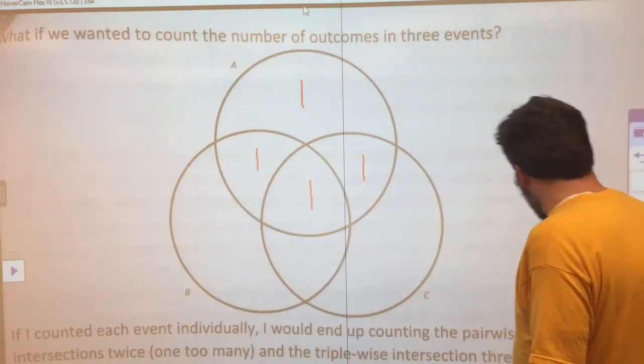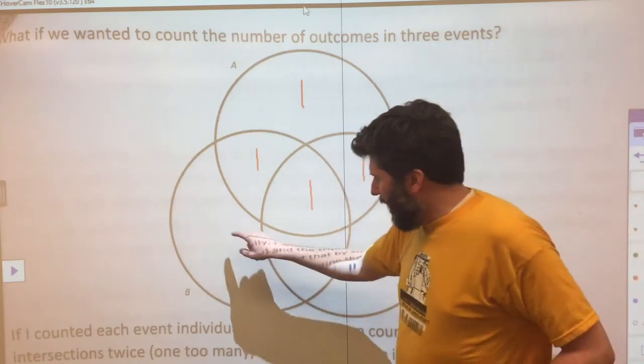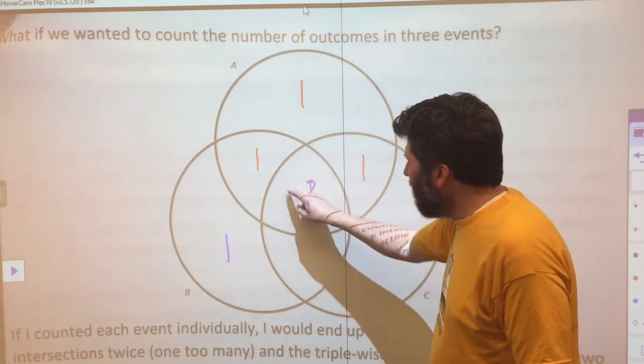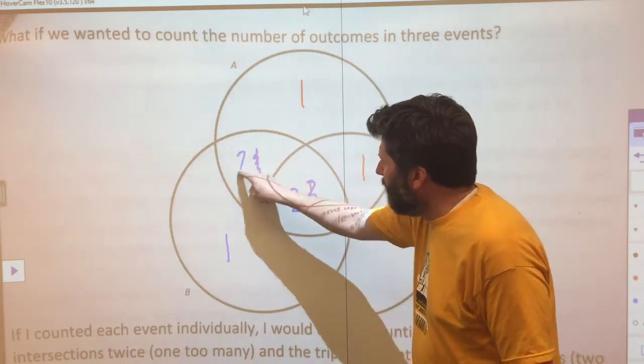If I count everything in B, these things have just been counted the first time, but these right here have now been counted two times.